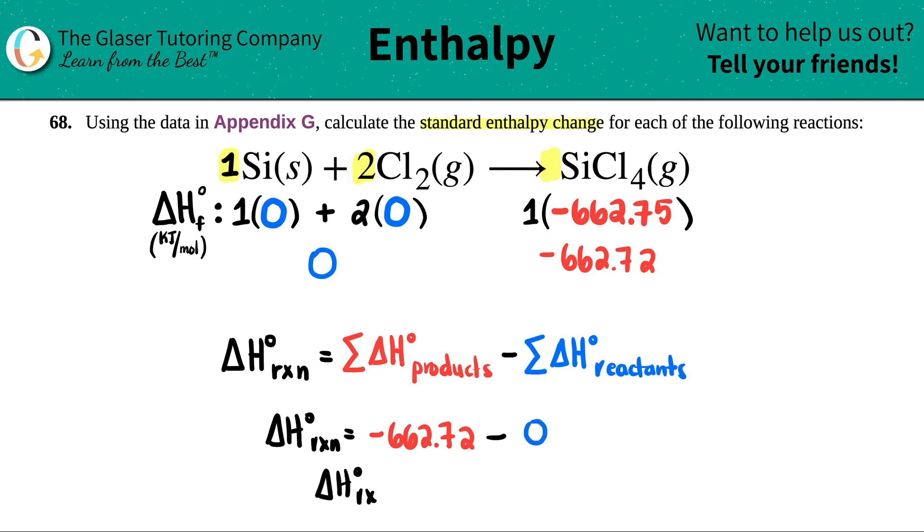Delta H for the whole reaction would be negative 662.72, and the units for delta H, if we're using the charts, is kilojoule per mole. So this reaction is exothermic. You will release heat. How much heat? 662.72 kilojoules.